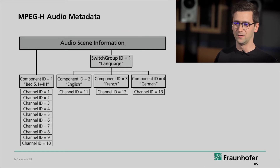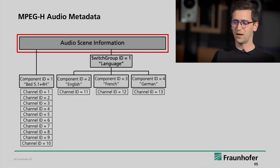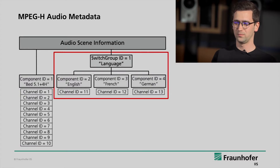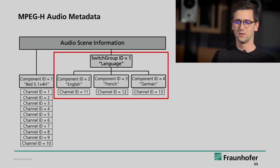So what do we have here? First of all we have something called Audio Scene Information. Then we have Components and something called a Switch Group. You may already see that this diagram represents the signals we have in our Pro Tools session: a 5.1 plus 4 bed, 3 objects — English, French and German commentator.